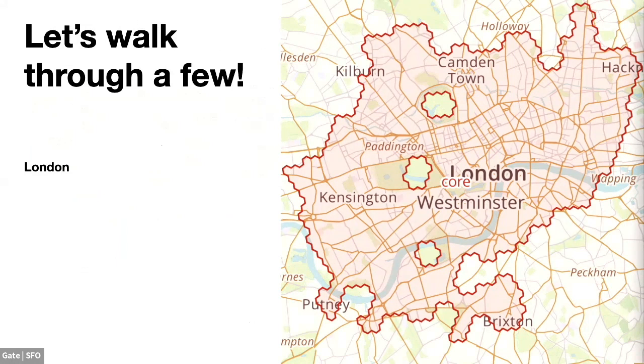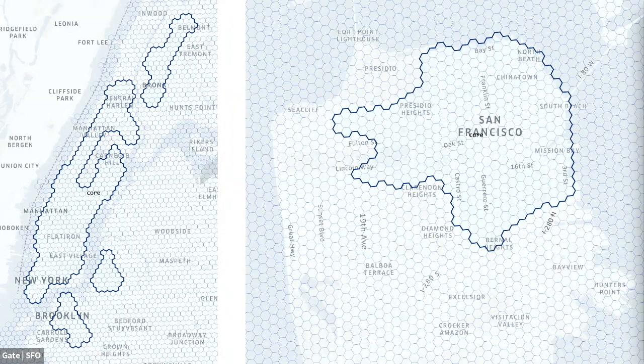Here you can see a few examples. For London, all the busy neighborhoods are included, and it naturally went around the parks. Closer to home, in New York City, as you'd expect, most of Manhattan is included except Central Park, and some of the busier areas like Brooklyn have started to show up more recently. The San Francisco result is pretty intuitive — you have the FIDI, SoMa, Marina, the Mission — and it goes around Golden Gate Park but does include the museum areas on the east side of the park.